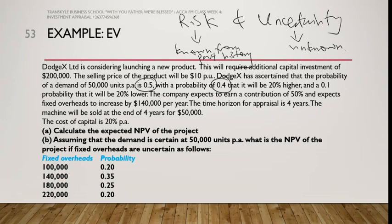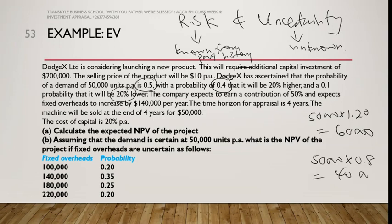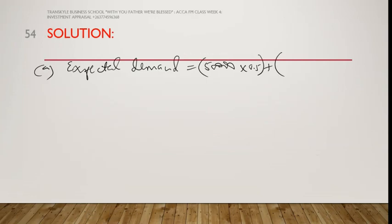There is a 0.4 probability that demand will be 20% higher. 20% higher means 50,000 multiplied by 1.20, which gives us 60,000 units. Then if it is 20% lower, that is 50,000 multiplied by 0.8, giving us 40,000 units. So: 50,000 × 0.5 plus 60,000 × 0.4 plus 40,000 × 0.1, and this gives us a total of 53,000 units.